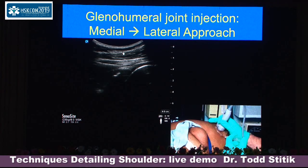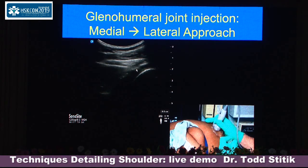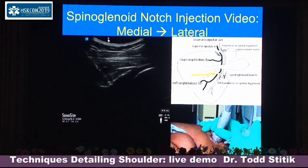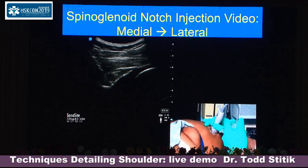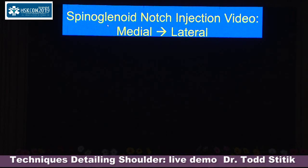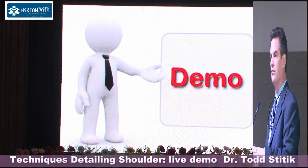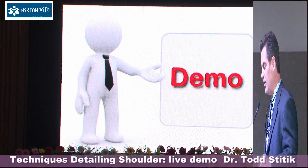Another way to inject the glenohumeral joint is lateral to medial using a steep approach — this is Dr. Todd's preferred method. You can also go medial to lateral. You are trying to get under the capsule and inject. For the spinoglenoid notch block, the suprascapular nerve can be blocked there as well, and this can serve as a two-in-one injection — nerve block and glenohumeral joint injection — with a single needle stick. That concludes the additional video demonstration; Dr. Todd will now head to the cadaver room for a live demonstration.